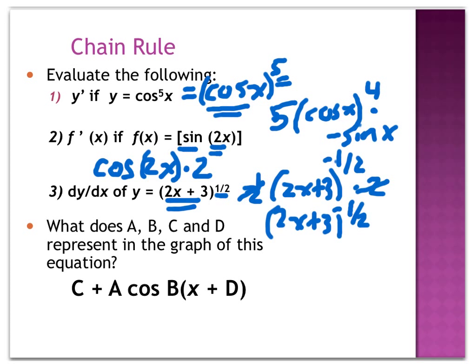For the trig equation, they ask what the constants a, b, c, and d represent in the graph of the function. This is a cosine function. c is the vertical shift — if it's positive it shifts up, if negative it shifts down. d is the horizontal shift, but it goes counterintuitively: positive d moves the graph to the left, and negative d moves it to the right. b relates to the speed — it's an indirect relationship giving the period by the formula 2π over b, where the period is the length of one complete cycle.